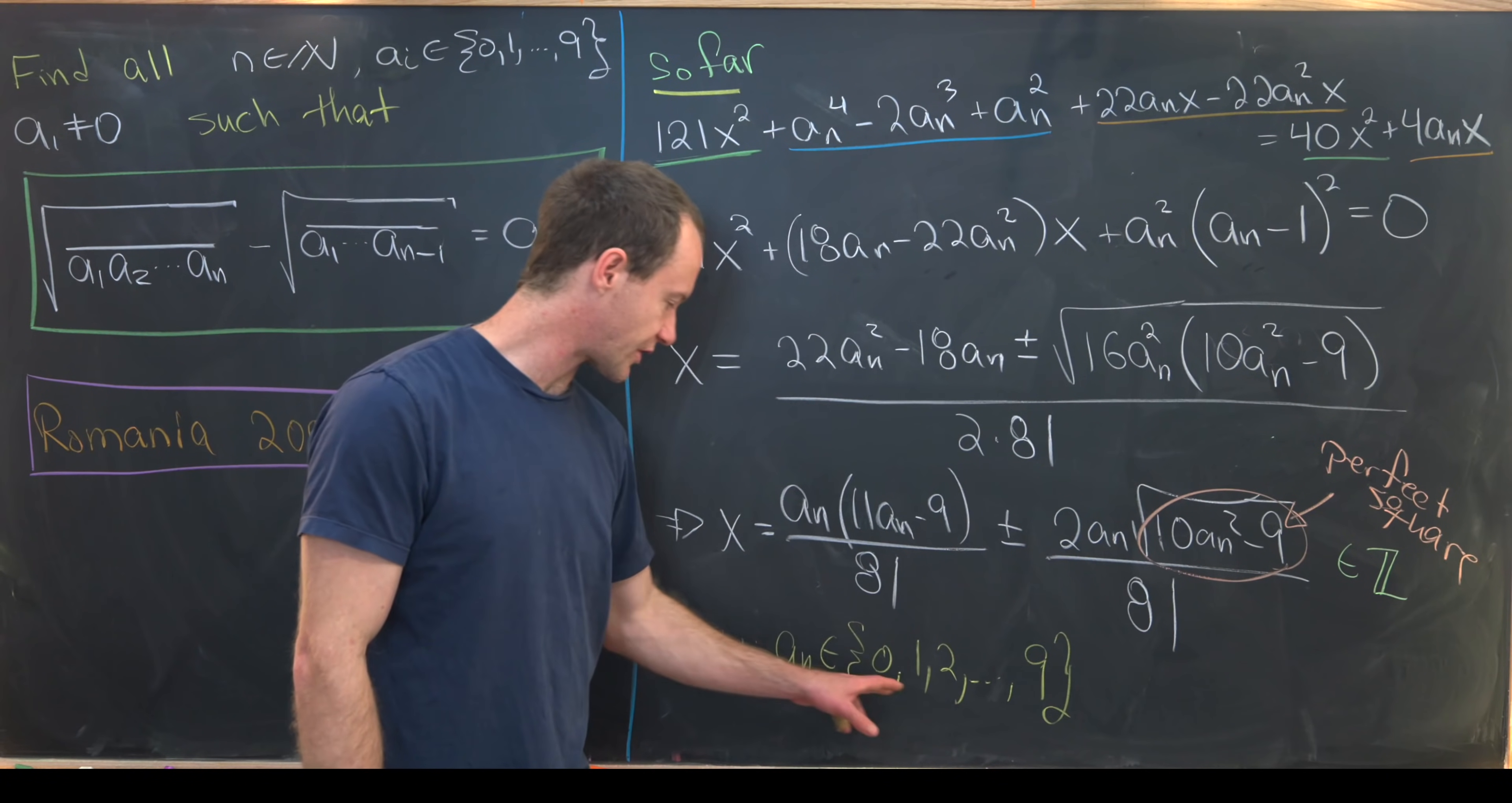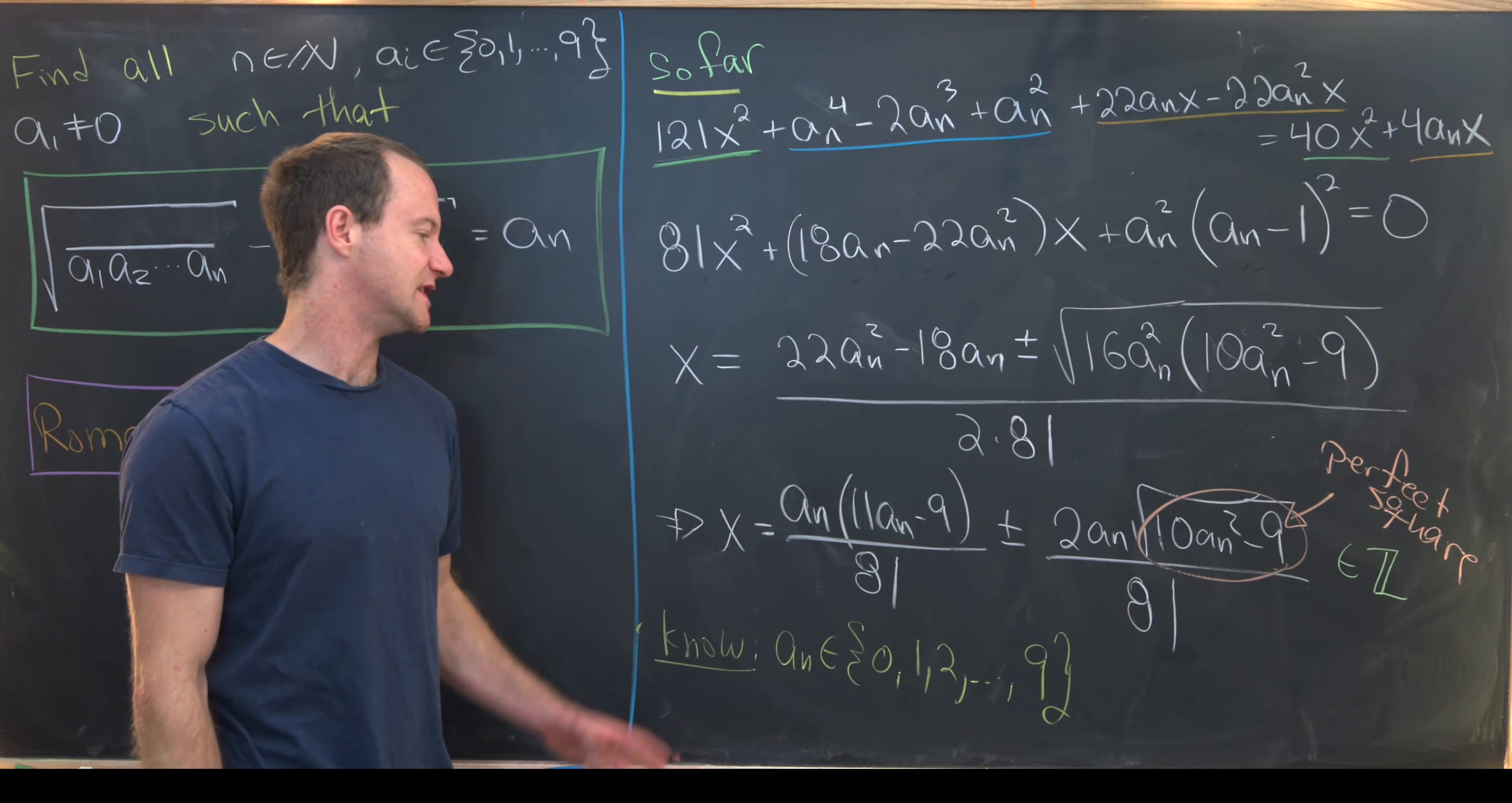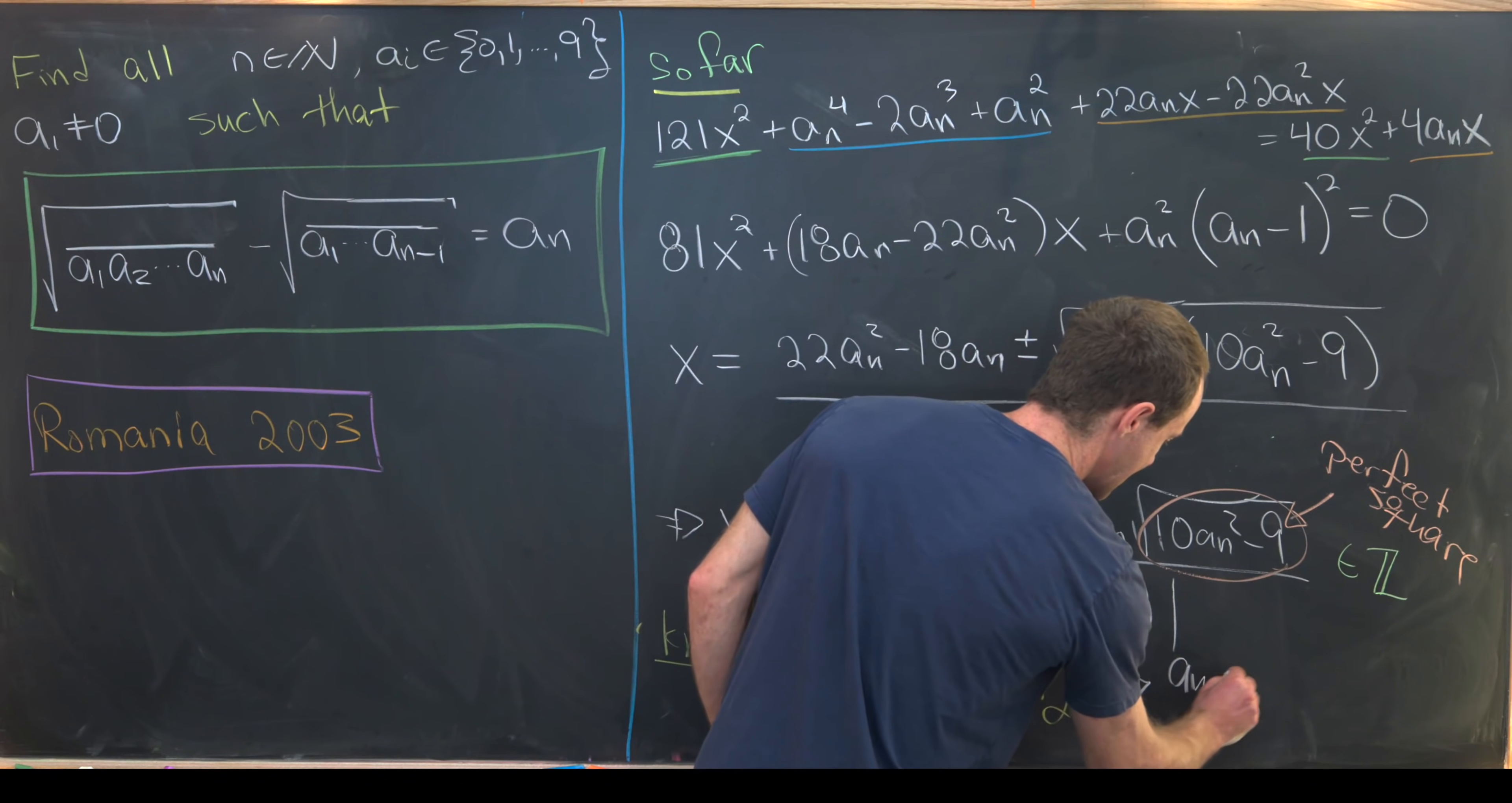Now putting these two facts together, this must be a perfect square and the whole thing must be an integer, allows you to sort through the possible values of an, maybe just one at a time until you find one that works. And what you'll see is that an must be equal to 9.